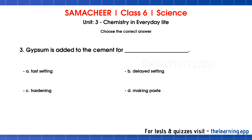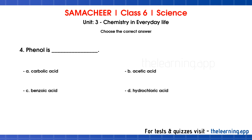Question 3. Gypsum is added to the cement for dash. Options are: A. Fast setting, B. Delayed setting, C. Hardening, D. Making paste. Correct answer is B. Delayed setting.